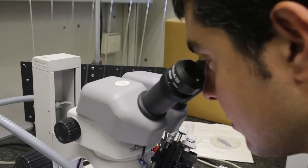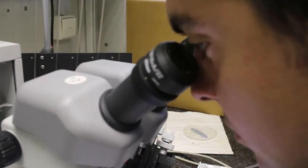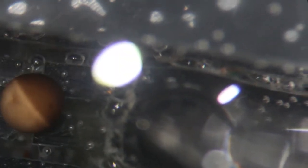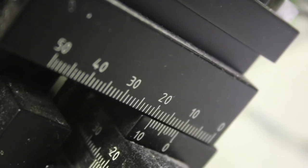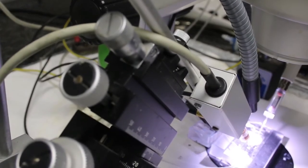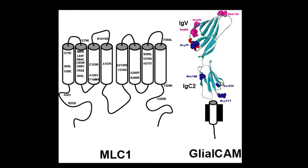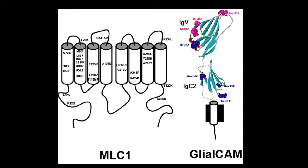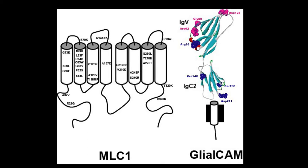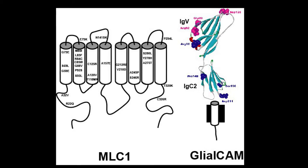Our group, in collaboration with the group of Marjo van der Naab from Amsterdam, have identified and characterized most of the mutations in the two genes related to the disease, which are called MLC1 and GLIALCAM. The function of these two proteins is still unknown, although our work has related their function to the regulation of glial chloride fluxes in the brain, and it seems that regulation of these processes is important for physiological functions such as the control of volume regulation and the process of potassium buffering.